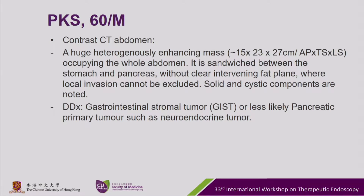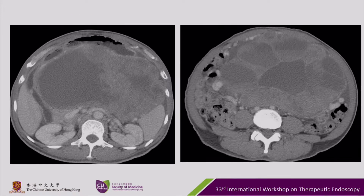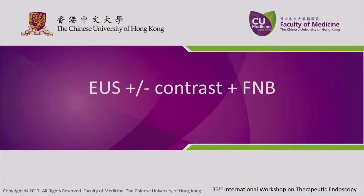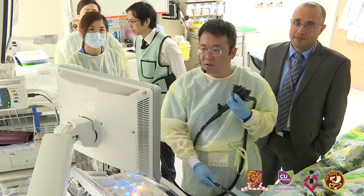Our top differential diagnosis included that of a GIST — a gastrointestinal stromal tumor. These are the photos from the CT films, and today we'll be performing an EUS with or without the use of contrast, and also a fine needle biopsy.